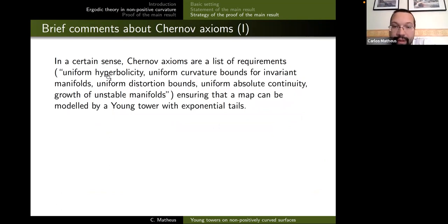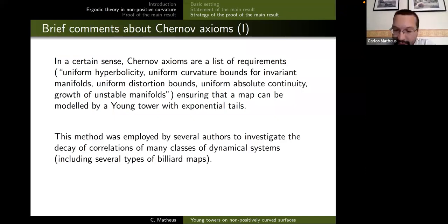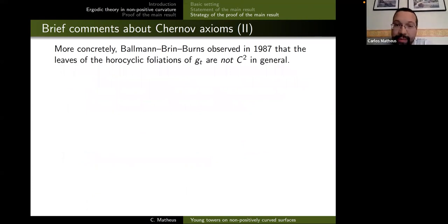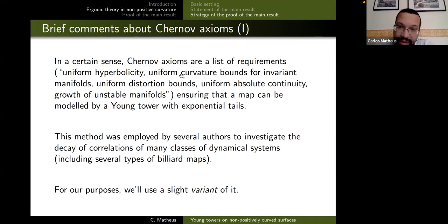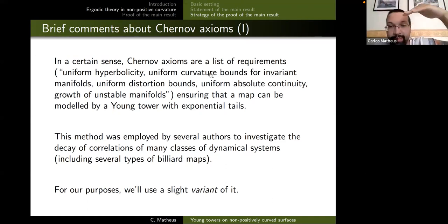The Chernov axioms are a list of usual properties in dynamics: uniform hyperbolicity, curvature bounds on invariant manifolds, distortion bounds, absolute continuity, and growth of unstable manifolds. This method was applied in many papers especially for billiards with great success. We are going to use the same schema with a little tweak.